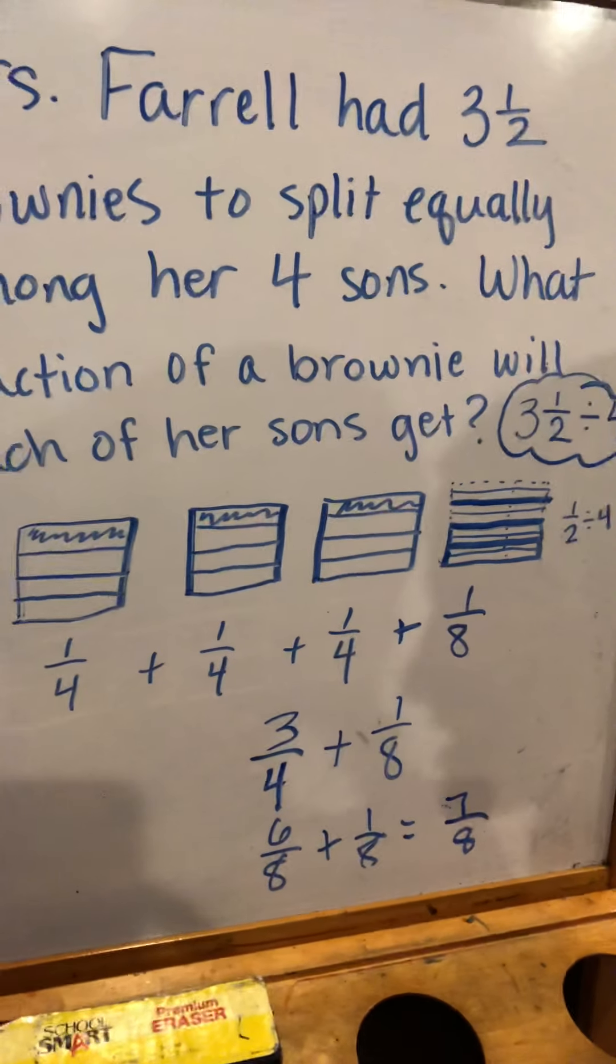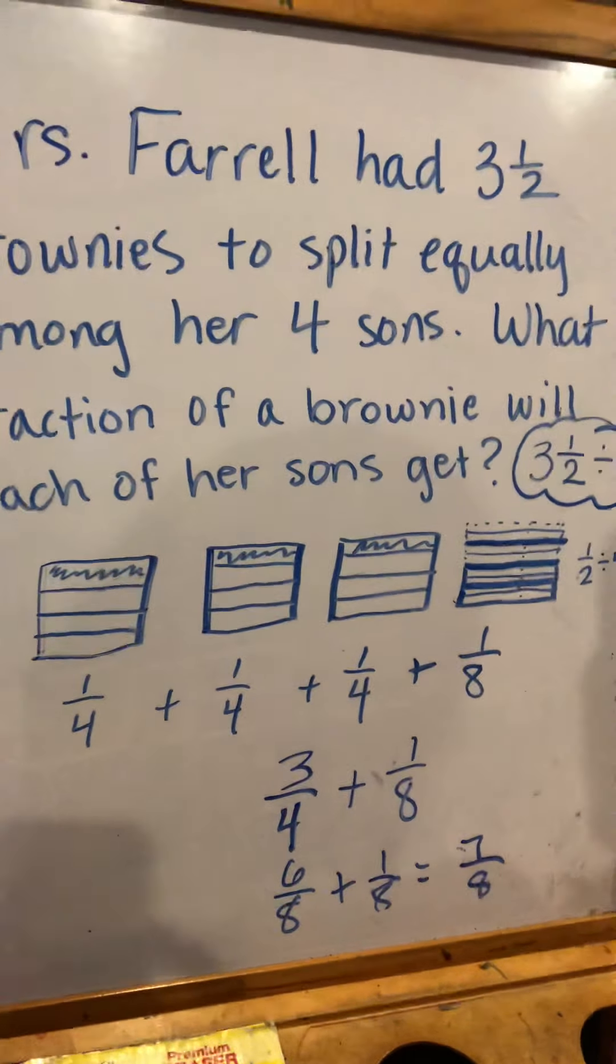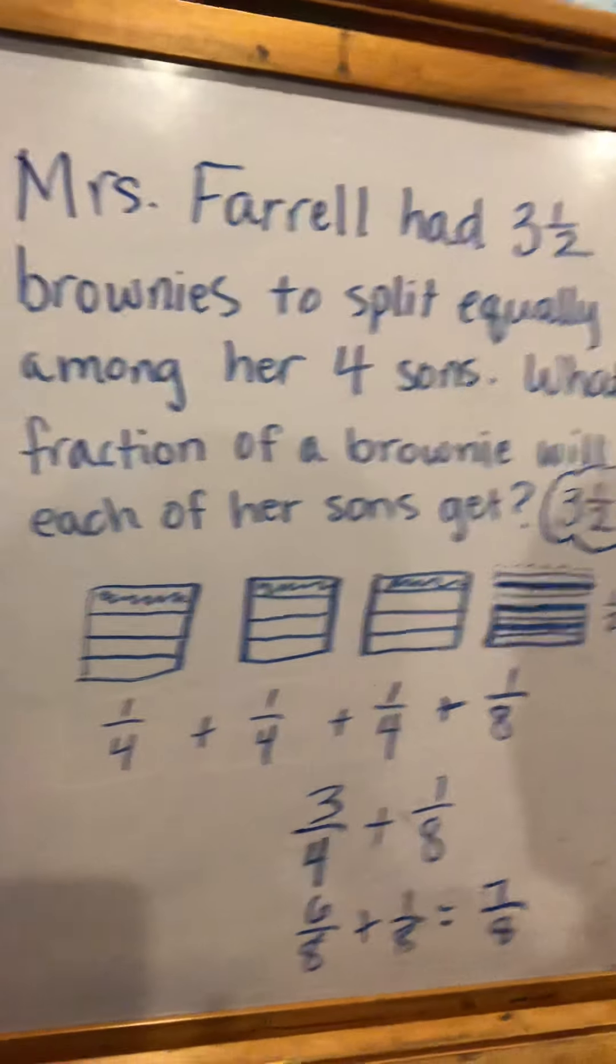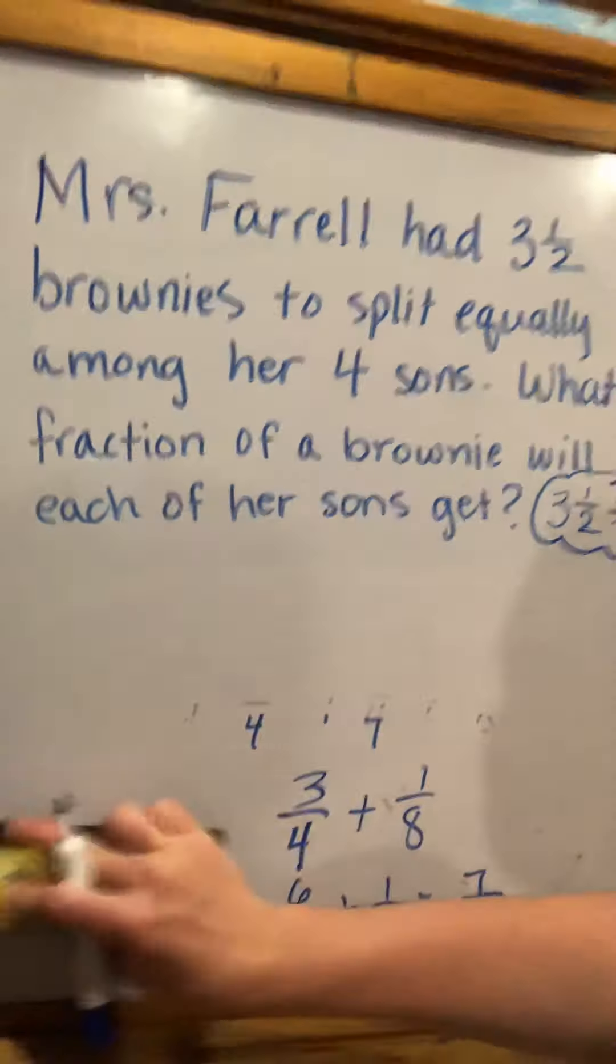I feel pretty good about that answer because seven eighths is very close to one whole. Eight eighths would equal one whole, so seven eighths is just one eighth away from that whole. If you remember, my original estimate had said that I think each boy will get close to one whole, so I feel pretty good about that. But just to check it, I was thinking of one other way I might go about solving this.